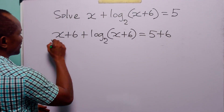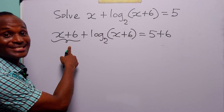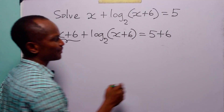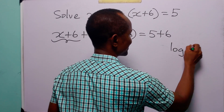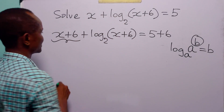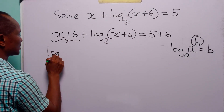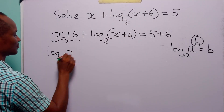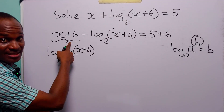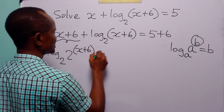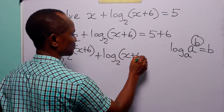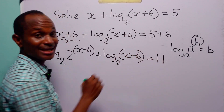The next thing we are going to do is write x plus 6 in terms of log to base 2. Remember that log base a of a to the power b is equal to b. So that means log to base 2 of 2 to the power x plus 6 is equal to x plus 6. And of course, we still have log to base 2 of x plus 6, and this is still equal to 11.